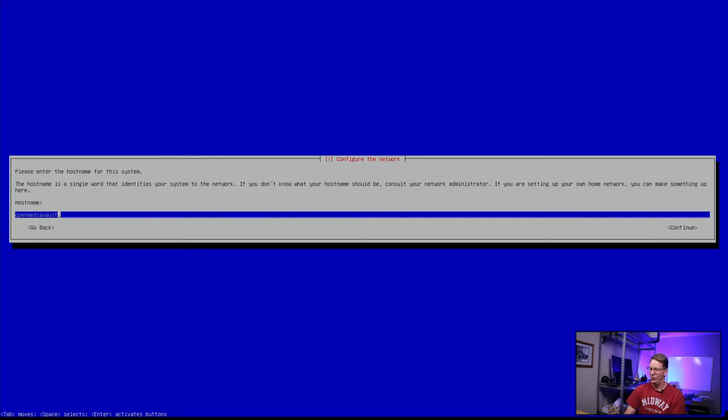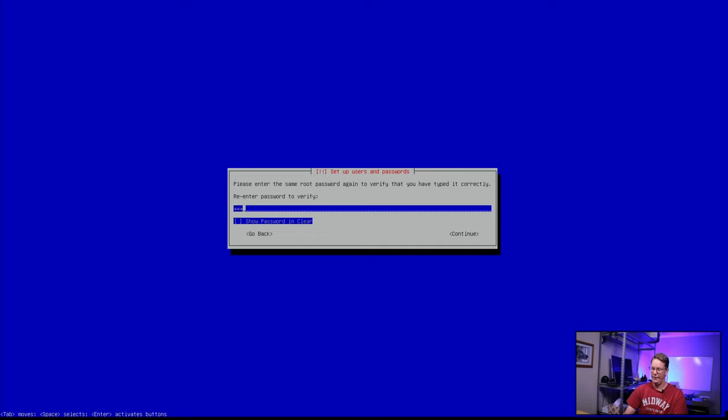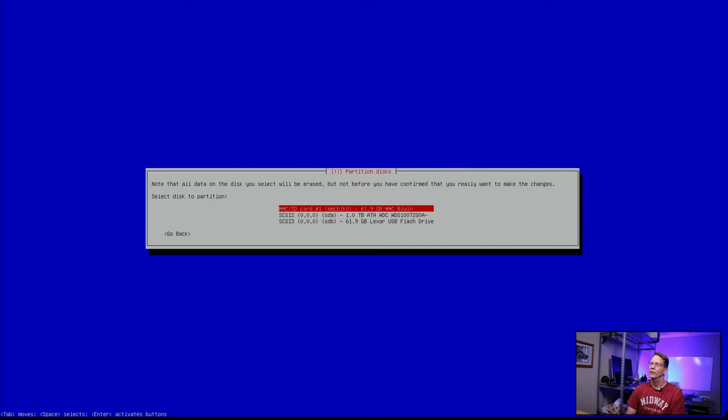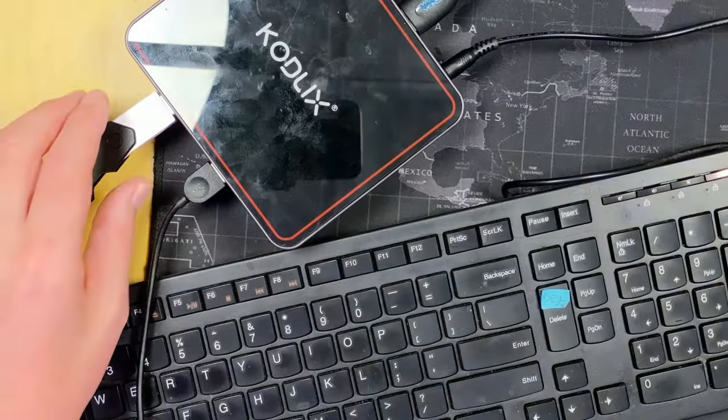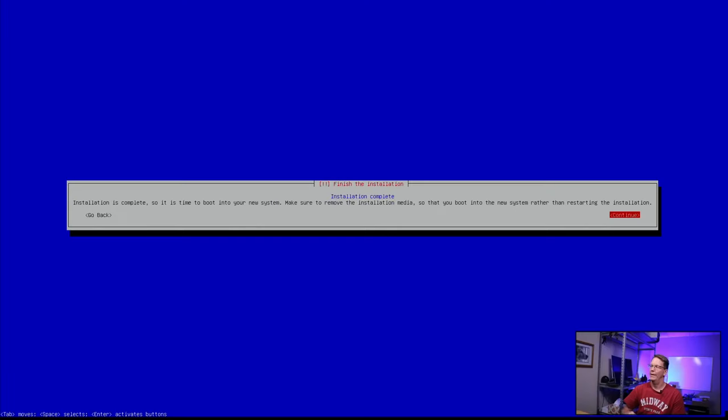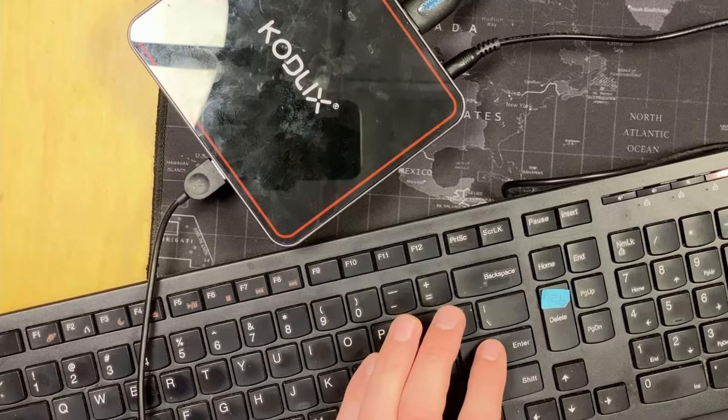Next we want to set the host name, then hit Enter. Set your root password. Do that again. Next we want to set our root storage, and so for me, it has a built-in MMC card, so we're going to use that for our operating system. The installation is complete. We need to pull out our USB drive, and then hit Enter as it says. And then the system will reboot.